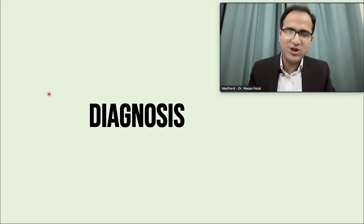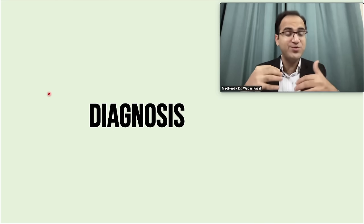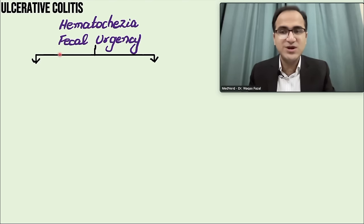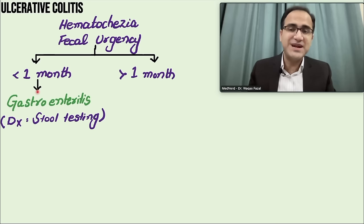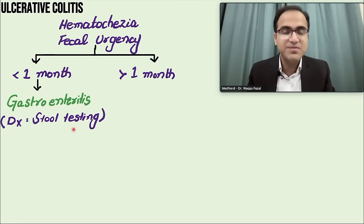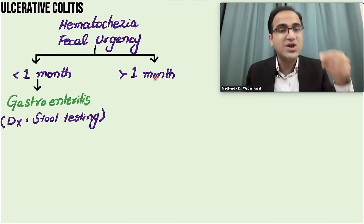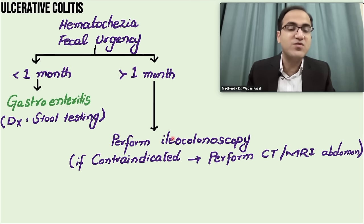For the diagnosis of ulcerative colitis, if a patient comes with hematochezia and fecal urgency for less than one month, stool testing and a trial of antibiotics can be given for possible dysentery. If symptoms have persisted for greater than one month, it is likely inflammatory bowel disease. The main investigation is ileocolonoscopy — a scope passed through the anus to examine the colon and ileum.